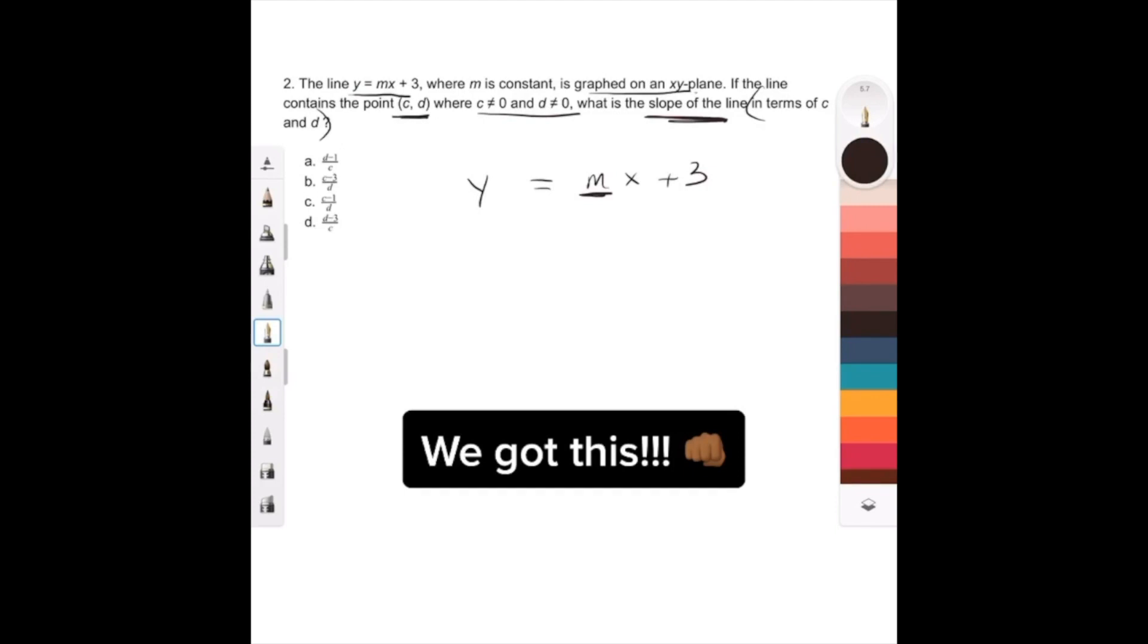If we know that (c,d) is on this line, that means c is an x value that works in the equation and d is a y value that works in the equation.